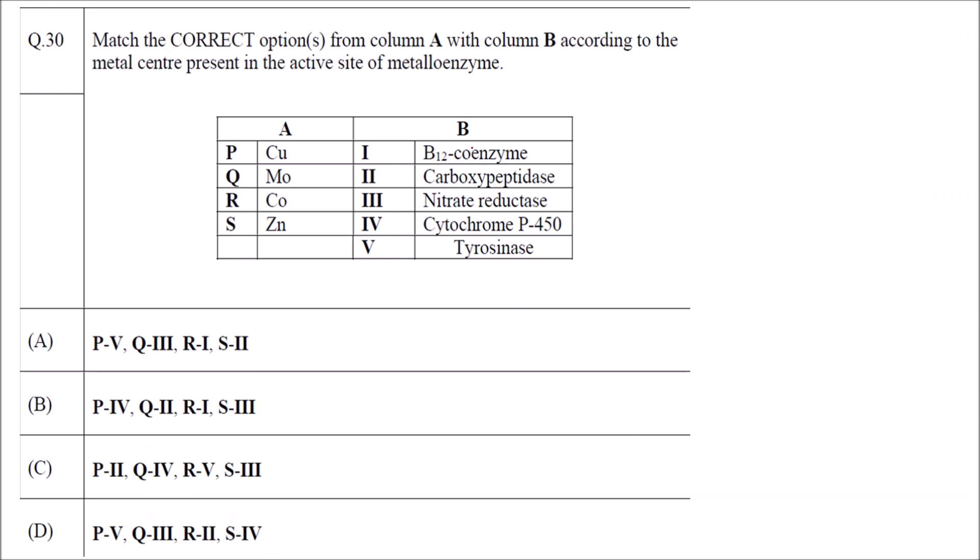Now let us see the question back again. B12 enzyme has cobalt CO. Carboxypeptidase has zinc. Nitrate reductase is a molybdase enzyme, so it has molybdenum. Cytochrome P450 has iron. And tyrosinase is an enzyme which has copper.